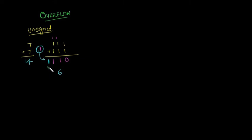This is 8, this is 4, and 2. 8 plus 4 is 12, 12 plus 2 is 14 — we are getting the correct result. So what we have to remember in unsigned arithmetic is: if we have a carry from the most significant bit position, then an overflow has occurred.